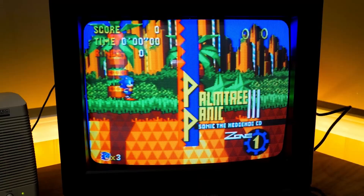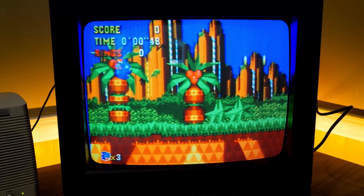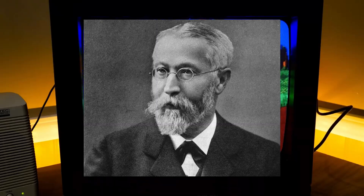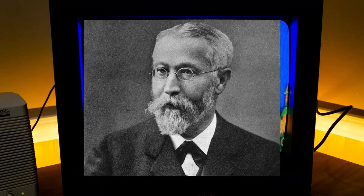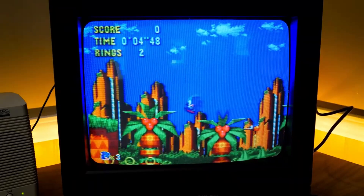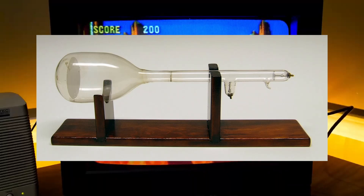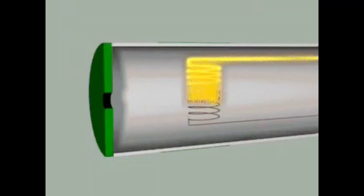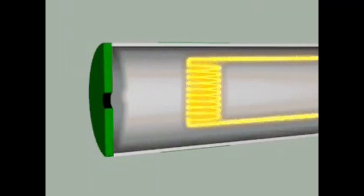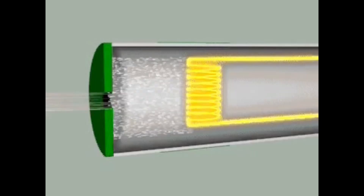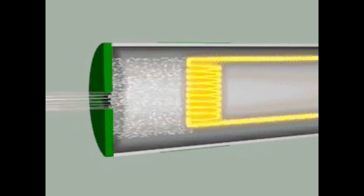The very first monitor was invented by a German scientist named Karl Ferdinand Braun in 1897. He created the cathode ray tube as the first computer monitor in Germany. The cathode ray tube, also known as CRT, works by emitting light when electrons strike the phosphors that are coated at the end of the CRTs.